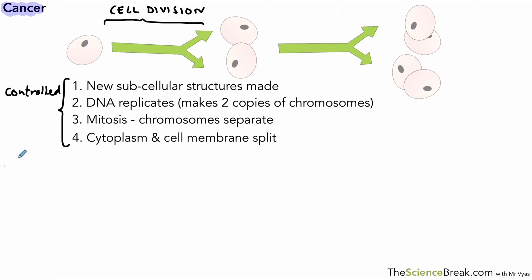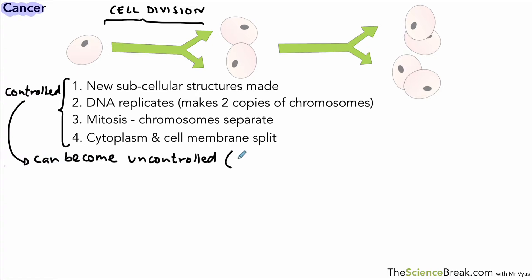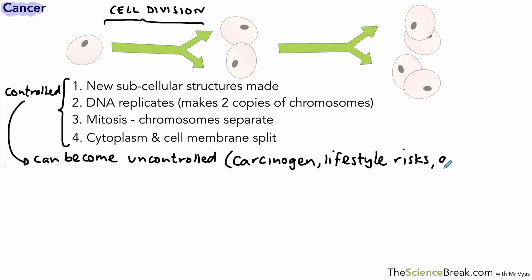Sometimes things can go wrong, and this process goes from being a controlled process to an uncontrolled one. The reason it can become uncontrolled is because of things like carcinogens — chemicals that cause cancer. It could be because of lifestyle risks, for example smoking, which contains chemicals that can cause cancer. And it could also be genetic. So there are various reasons why this process can become uncontrolled.